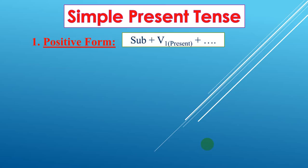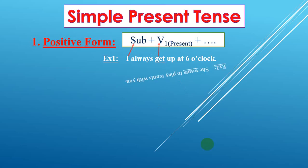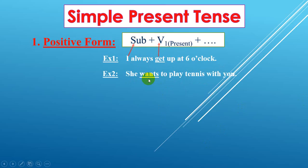Okay, so let's see the examples all together. The first example is: I always get up at six o'clock. The subject here is 'I' and the verb — verb one in Present Simple — is 'get'. This is to show the Present Simple. The second example: she wants to play tennis with you. Subject is 'she', verb is 'want', but we add S because the subject 'she' is singular.